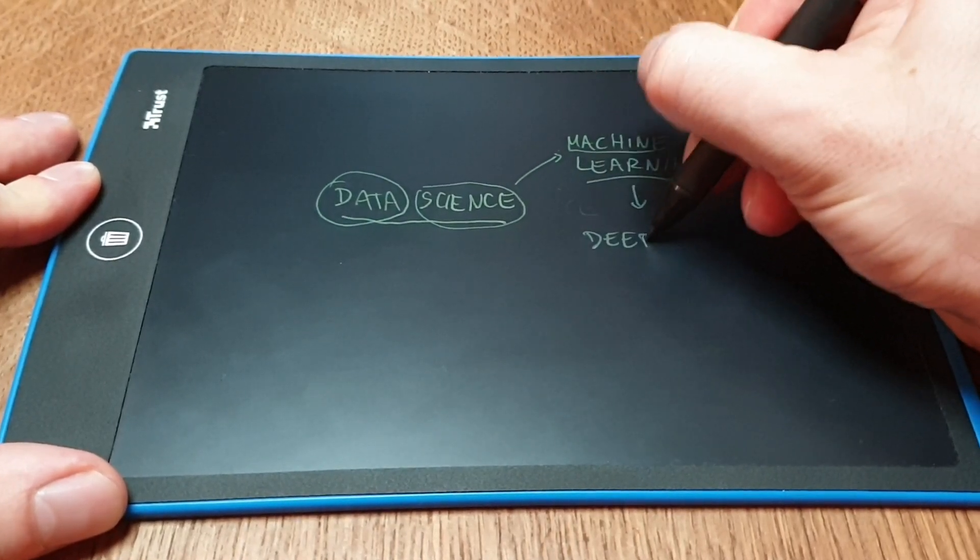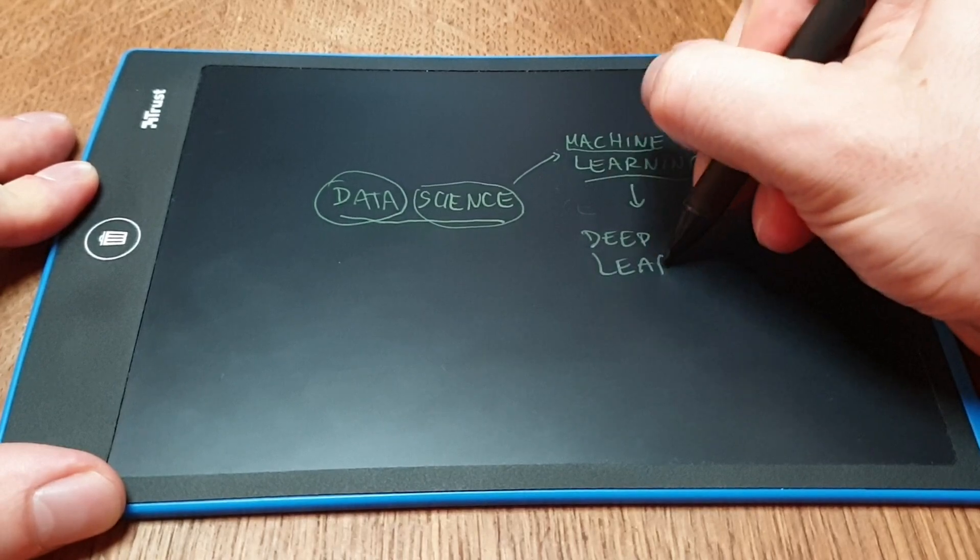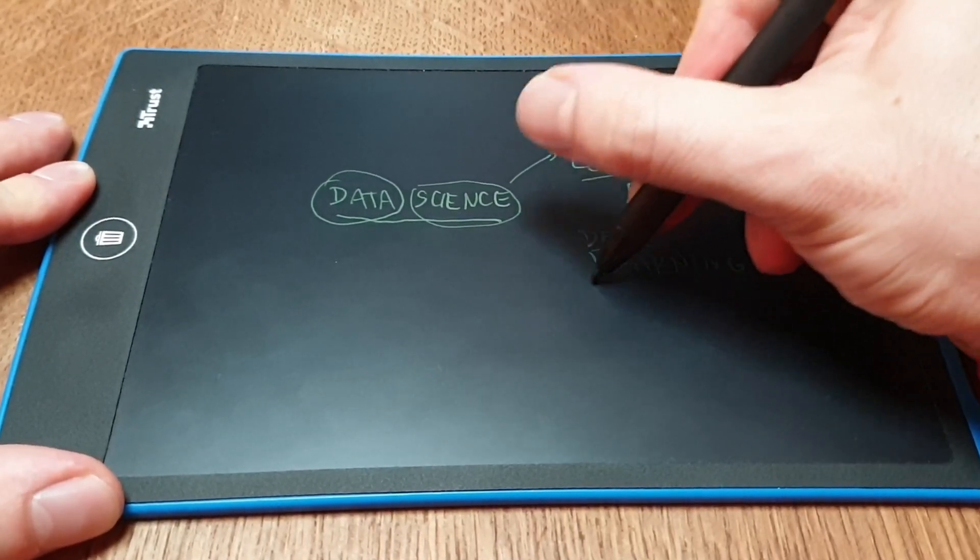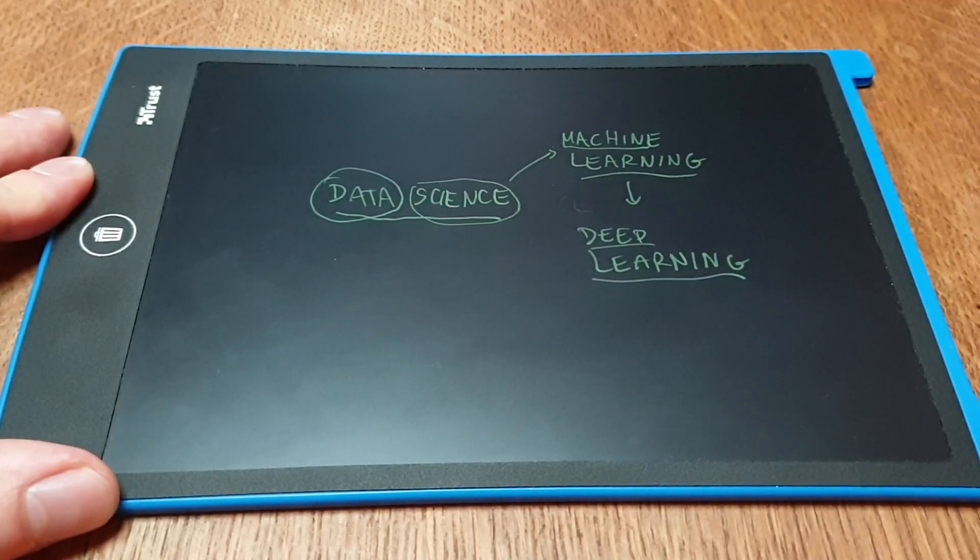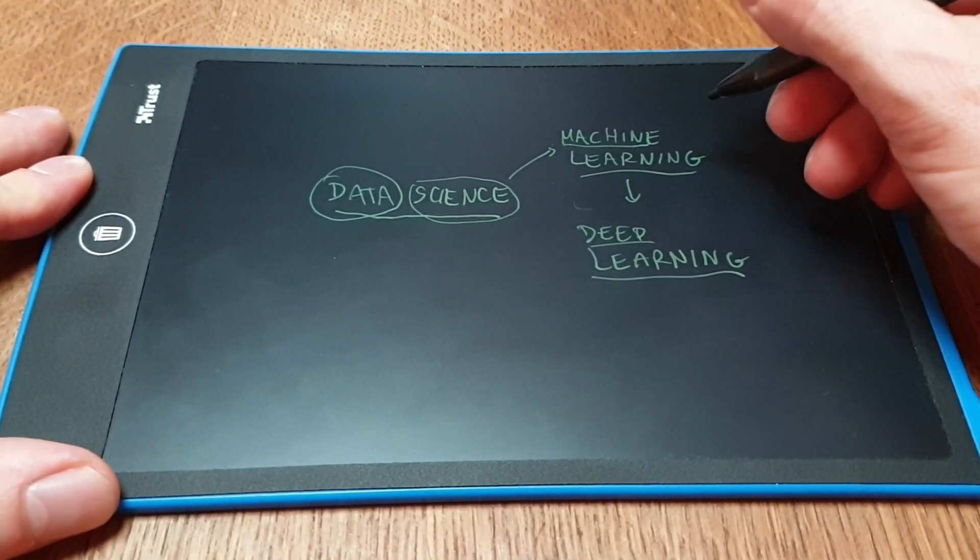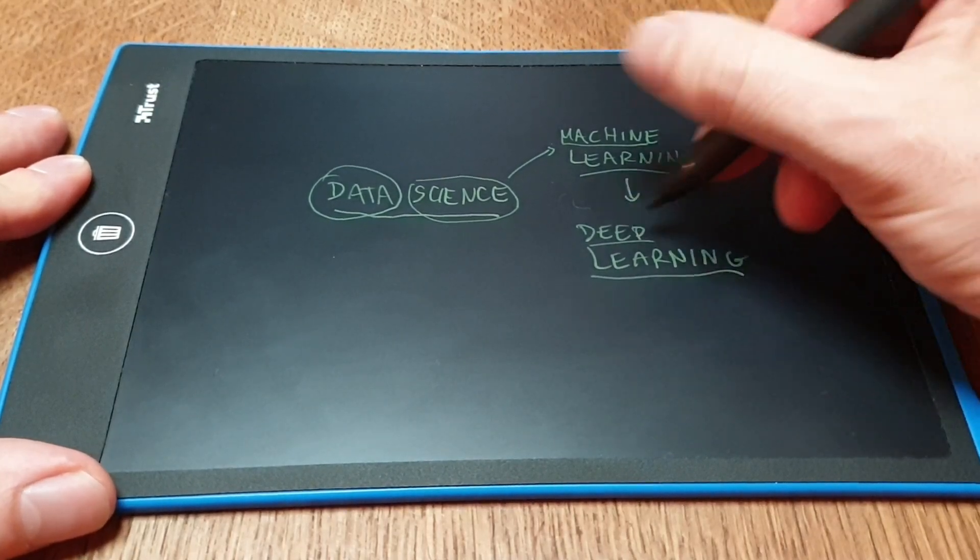And then if you go deeper, then we arrive at deep learning. So deep learning is machine learning when we talk about neural networks of depth at least three or four. That's the most common definition.